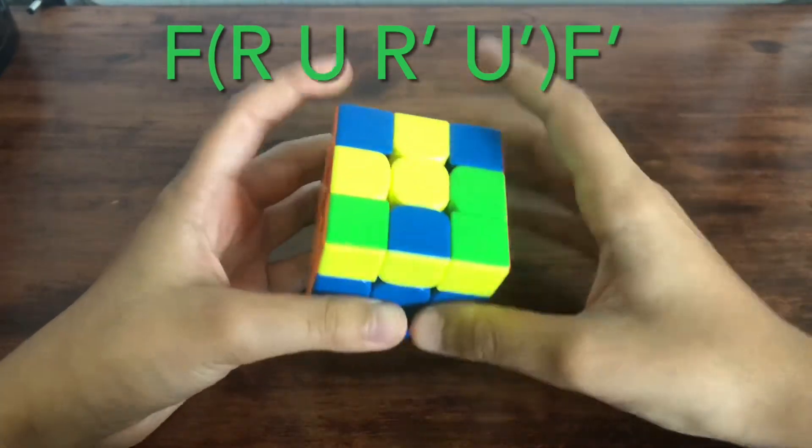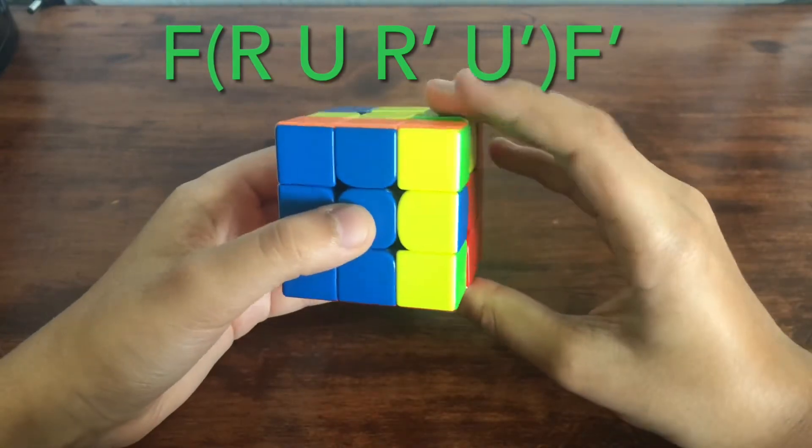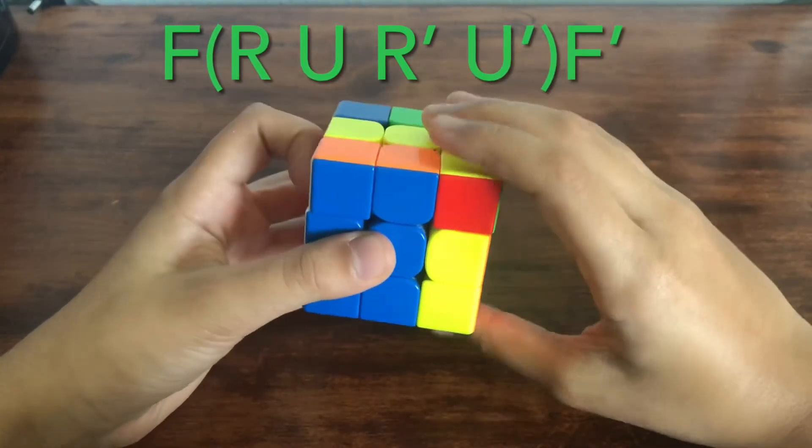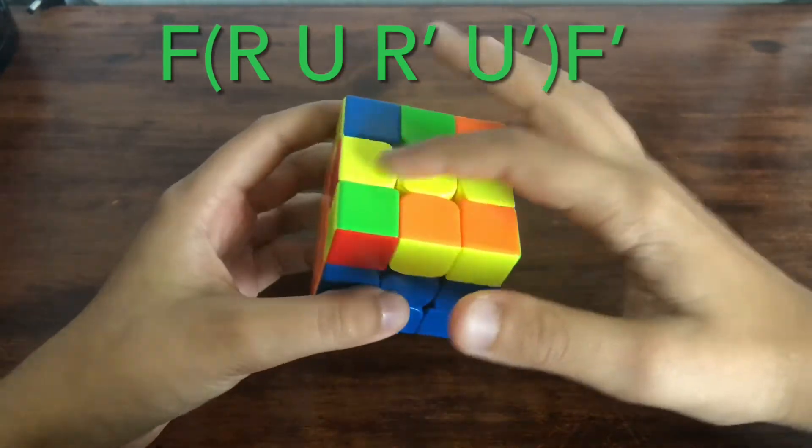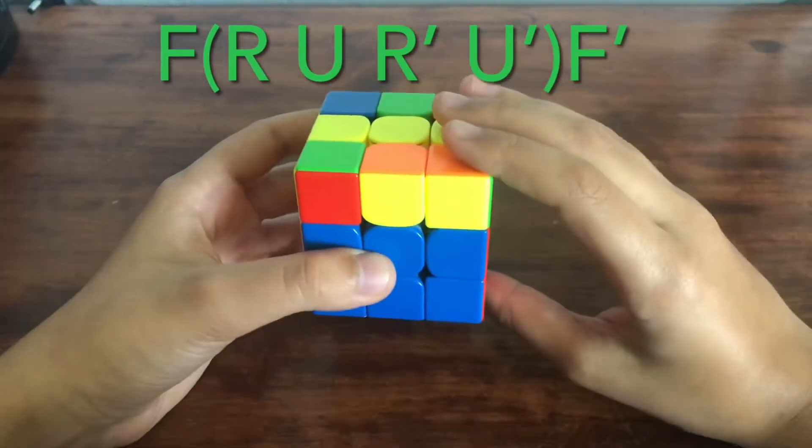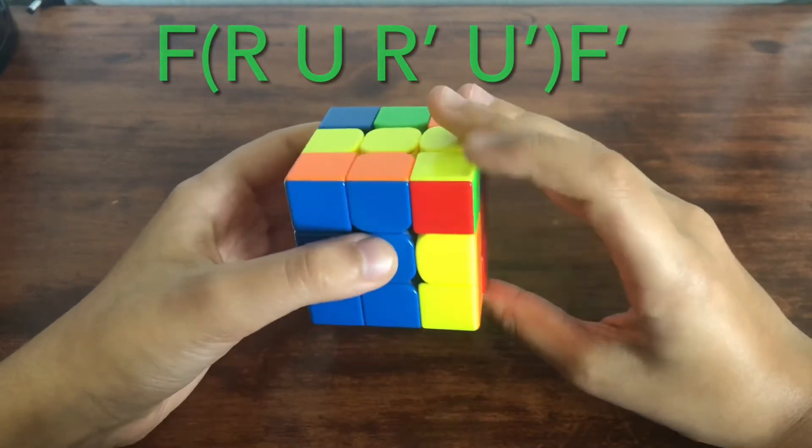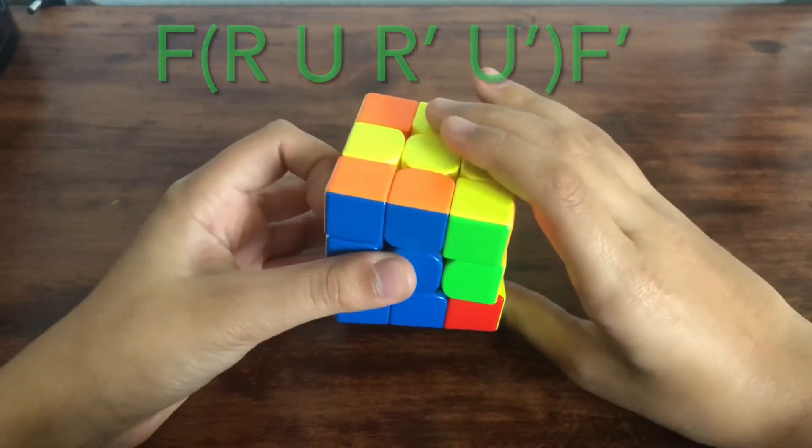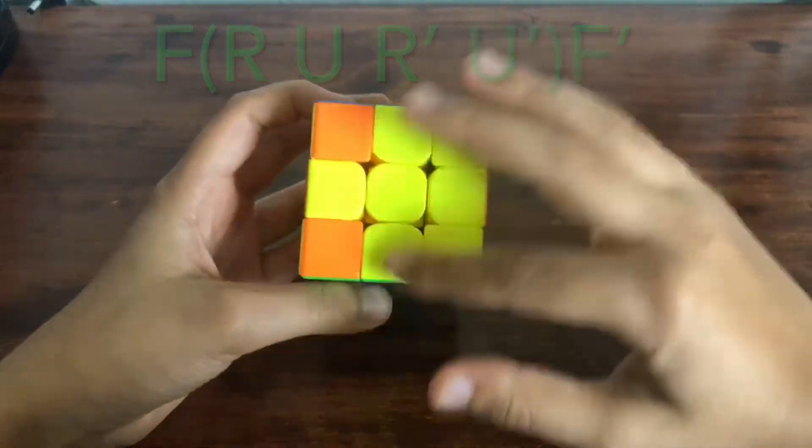And you do F R U R' U' F', and now as you can see you have a line. So you hold this line horizontally and you do it again: F R U R' U' F', and now you have a cross.